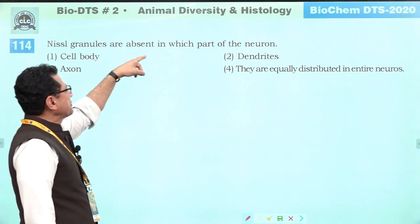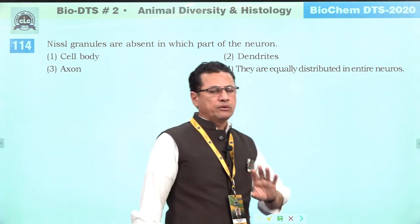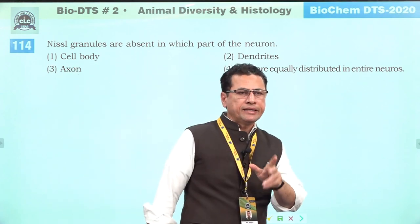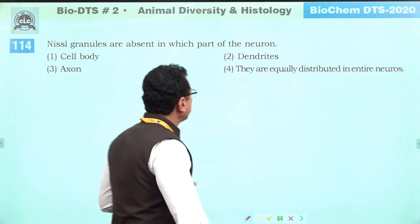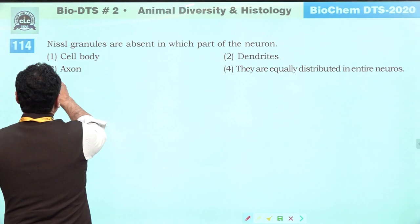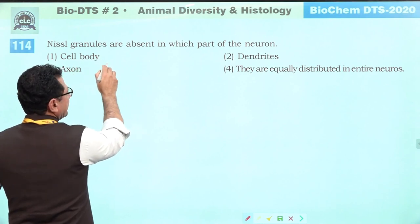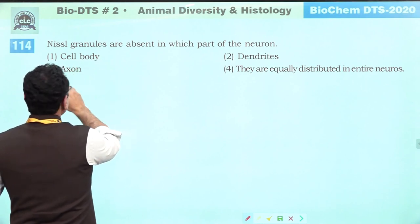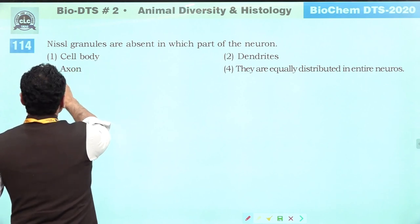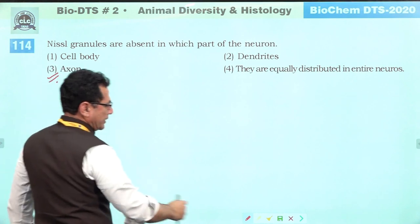Nissl granules are absent in the axon of neurons. They are found in the cell body and dendrites but not in the axon. Answer is three.